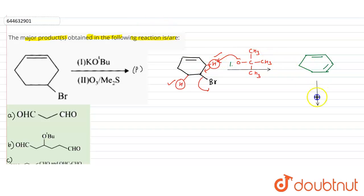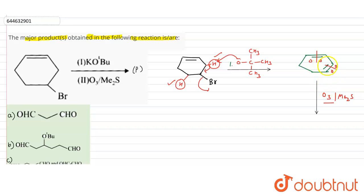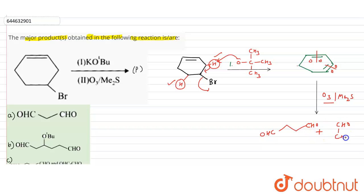In the second step, we carry out ozonolysis. The method is simple — you put ozone across each double bond. Writing out the products of ozonolysis, there are two carbons involved, and each gives a CHO group.